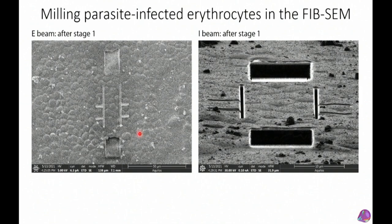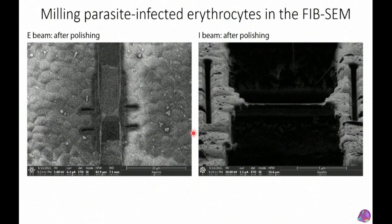We select a couple of cells of interest — they look like a fried egg, with the red blood cell around the parasite visible as a little bump. We set milling boxes and use the ion beam to mill thinner and thinner. By end of day, after hours of work, we're down to under 200 nanometers, desperately hoping the lamella doesn't break. The final lamella is about 150 nanometers — so thin all contrast disappears and you can almost see through it.